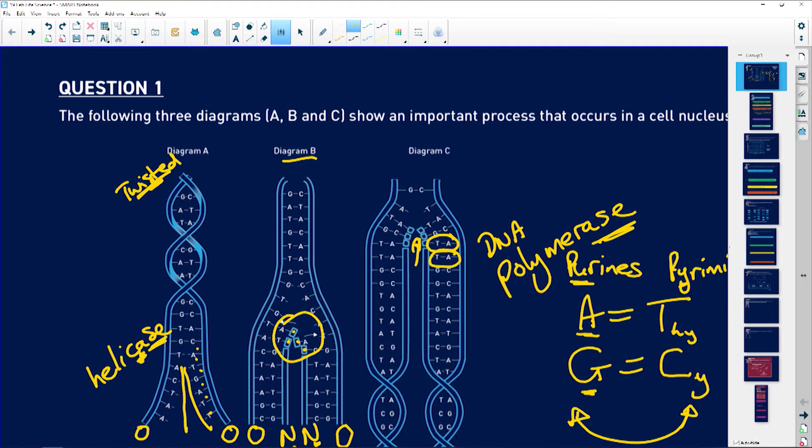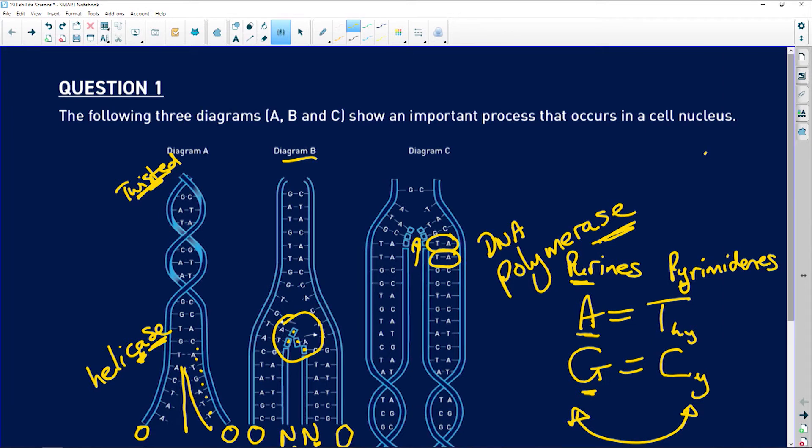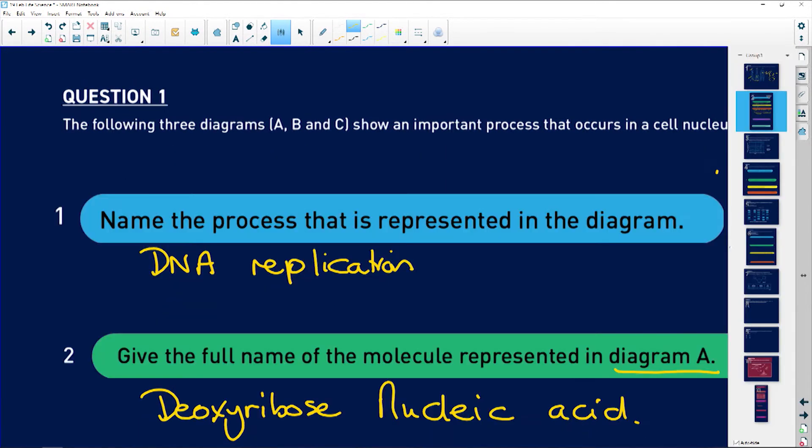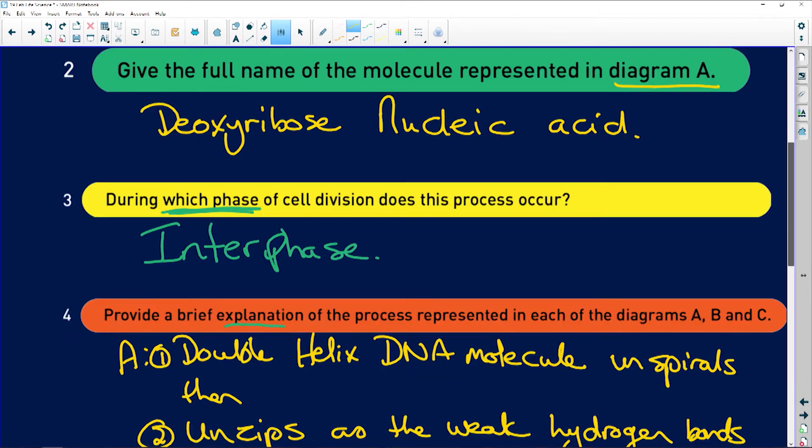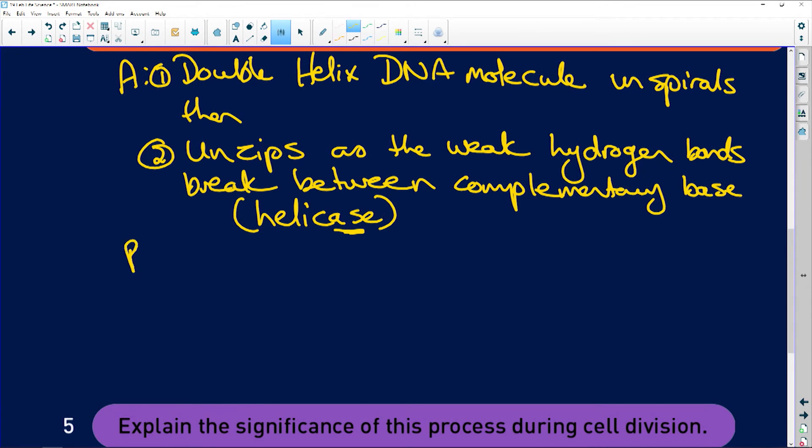If we look at B, we're going to have each strand - there's our original strand - and it's going to be attracting new nucleotides so that we have two different strands. In B, each separate DNA strand is a template, and this is important - both strands are going to become templates and attract...